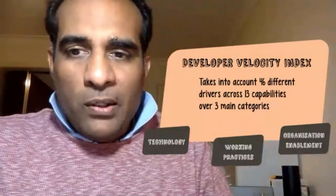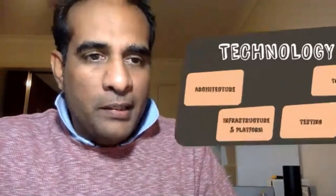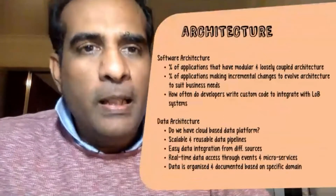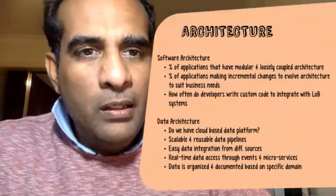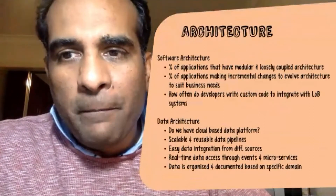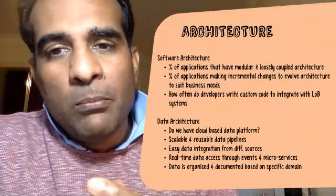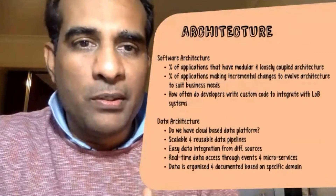In terms of technology itself, there are four main capabilities: architecture, infrastructure and platform, testing, and tooling. In architecture, there are probably two main things. One is around software architecture itself — how modular and loosely coupled your architecture is.